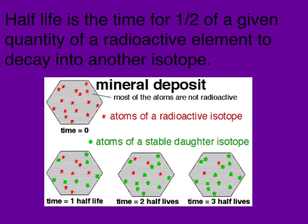The half-life is defined as the time for half of a given quantity of a radioactive substance to decay into another isotope. Here we have a mineral deposit, and most of the atoms are not radioactive — represented by the gray area. But there are some atoms that are radioactive, represented by the red stars. At time zero, we have a certain number of those red stars. After one half-life, half of those red stars have decayed into something else — the green dots. After another half-life, another half of those red stars will have decayed, leaving four. After the third half-life, half of those will have decayed, and there are only two remaining.